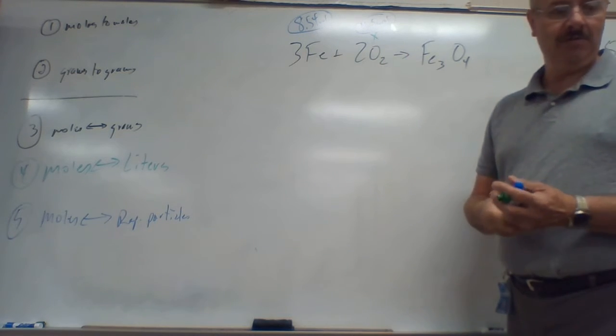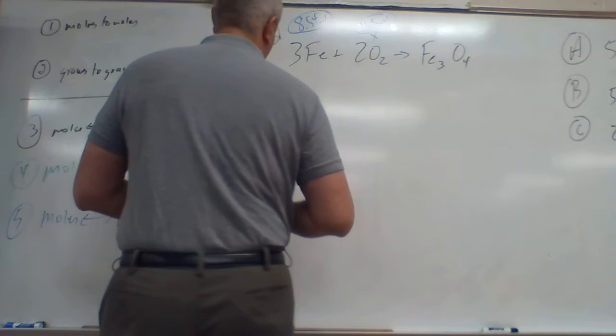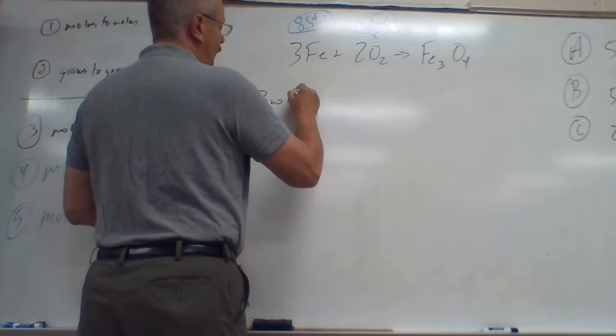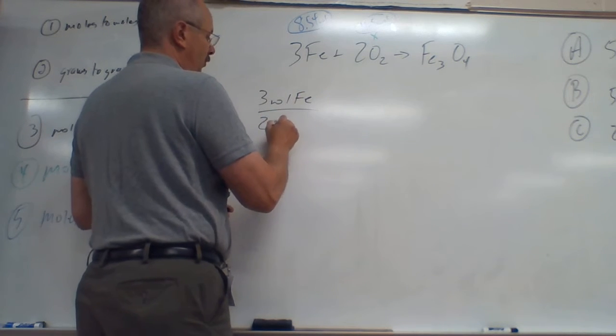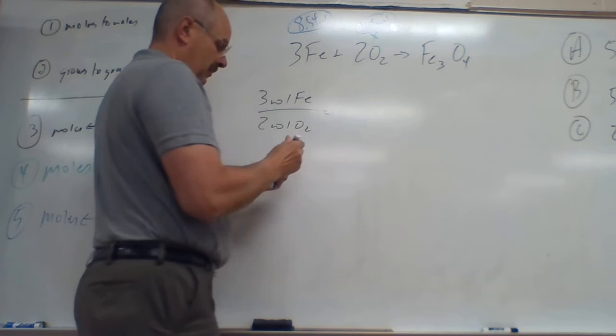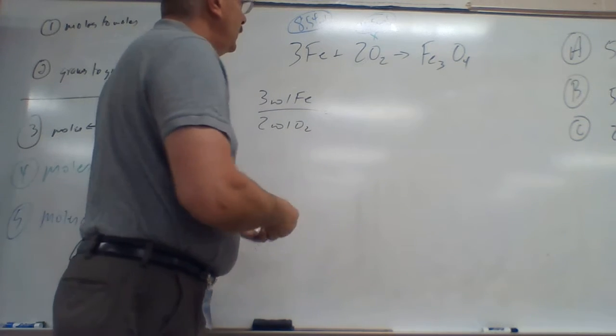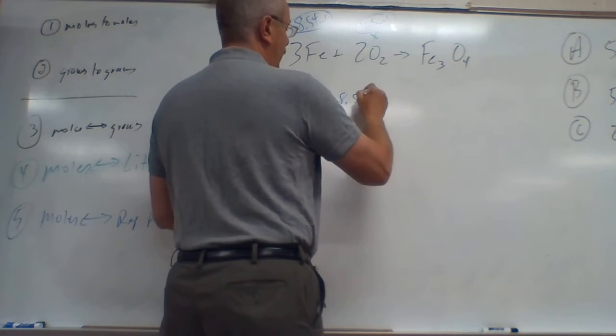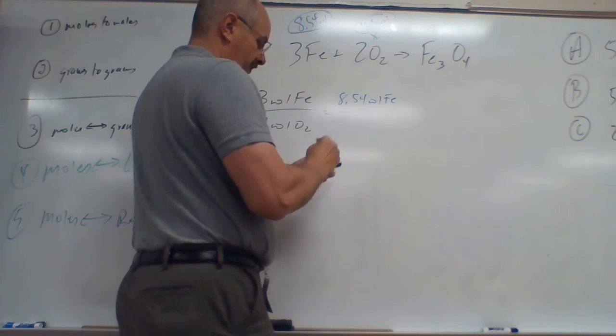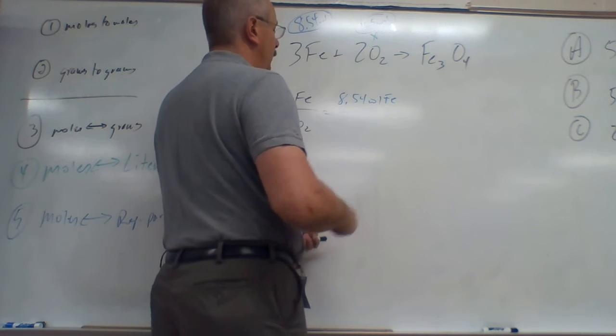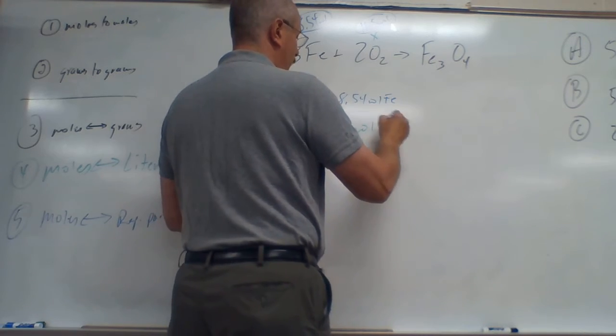So in doing that I gotta do 3 moles of Fe to 2 moles of O₂, and then we get 8.54 moles of Fe, and we're trying to find out my new green x—x moles of O₂.